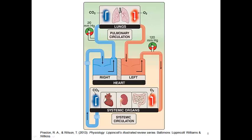Spirometry is used to assess lung health. From pulmonary function tests we can derive four lung volumes: tidal volume, inspiratory reserve volume, expiratory reserve volume, and residual volume. From those volumes we can get capacities: total lung capacity and vital capacity. Finally, the air enclosed in the conducting zone — the region that does not participate in gas exchange — is known as the dead space.